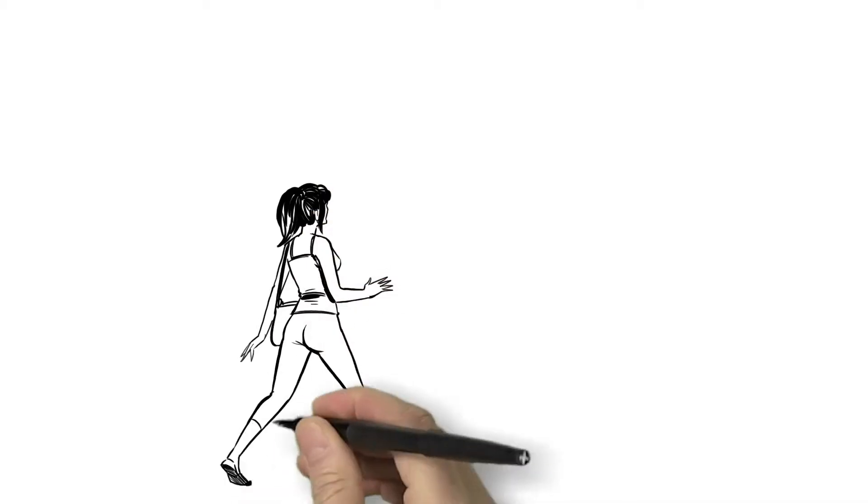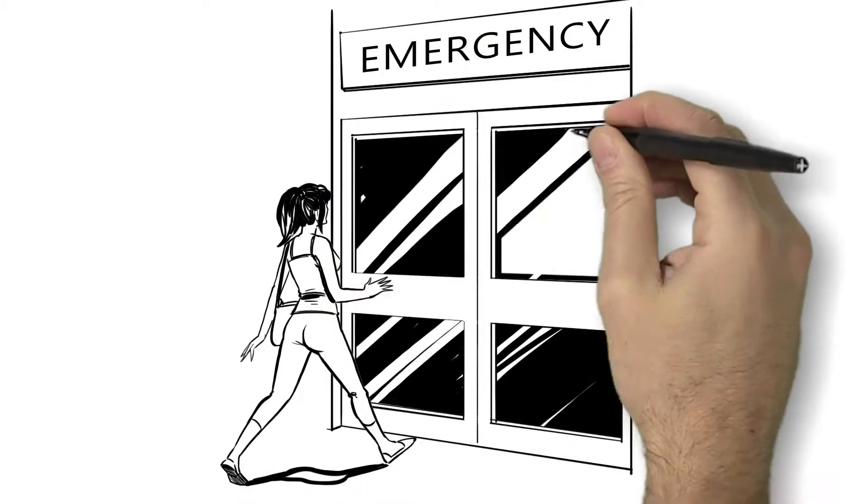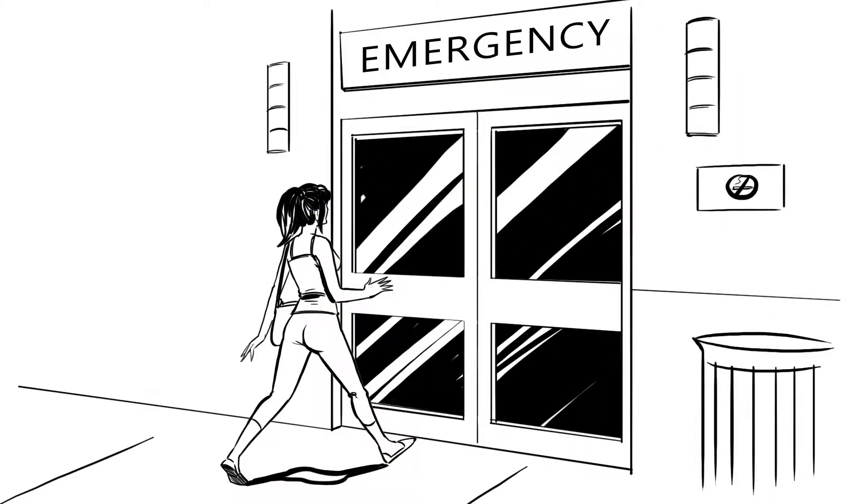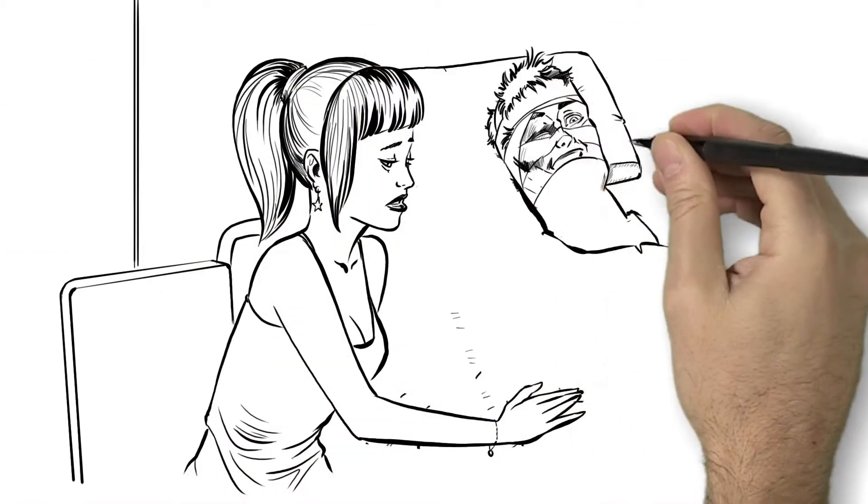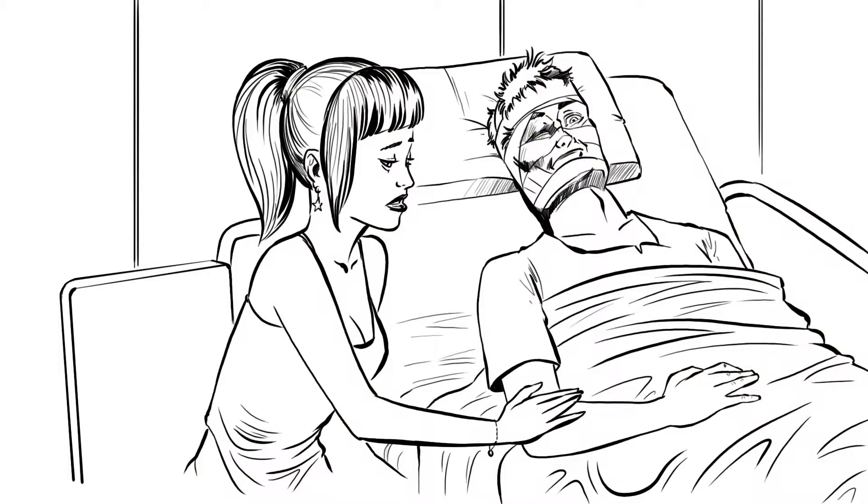Later that night, Jenny arrived at the ER to see Blake's face covered in bloody bandages. She'd only been his girlfriend for about a month, but this was definitely the worst she'd ever seen him.